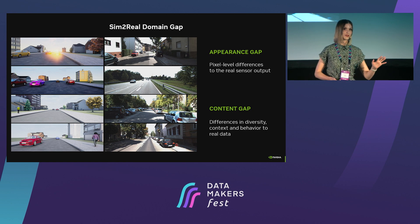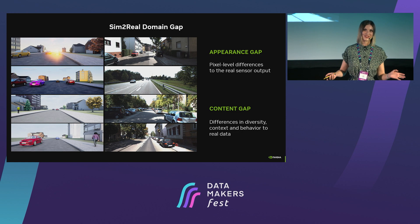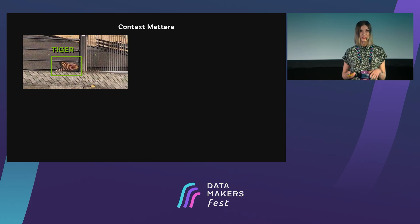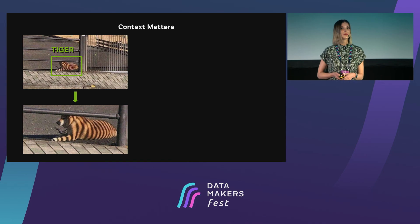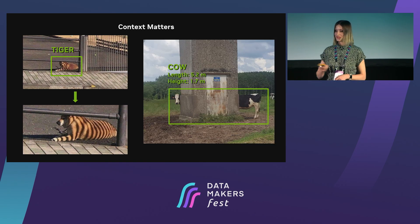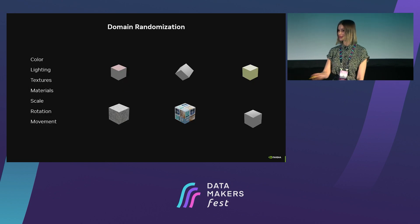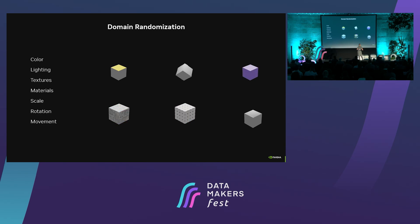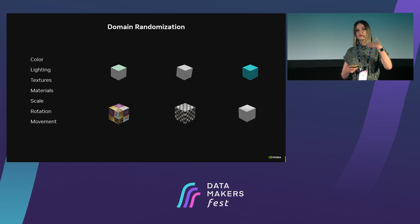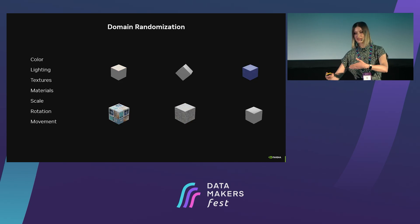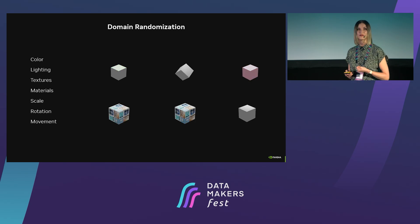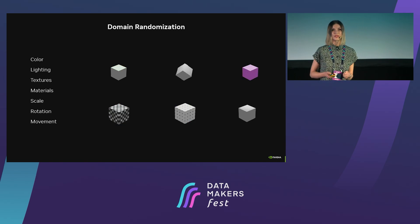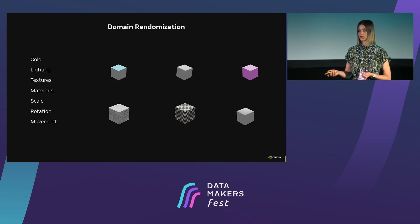Do I have one object in the scene or five objects? Context really matters. Imagine you walk outside and see a tiger, but you walk closer and understand it wasn't a tiger. So context really matters. In order to bridge this sim-to-real domain gap, we need to rely on a technique called domain randomization, which means transforming the appearance of your assets by randomizing certain aspects — morphological characteristics like color, lighting, and textures, but also geometrical properties like scaling, rotation, and simulating movement of the object.